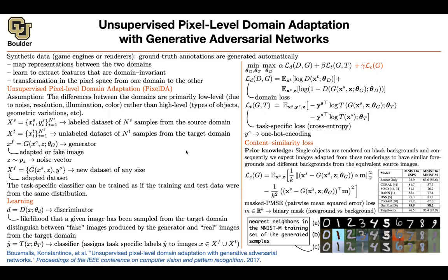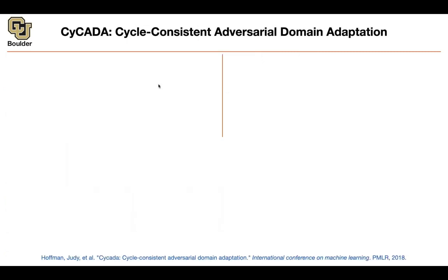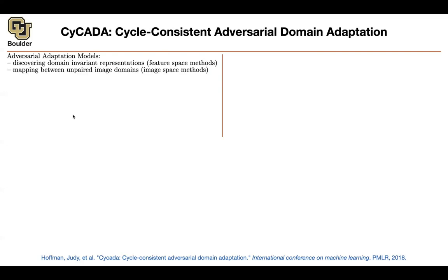Now that we see the similarity between domain adaptation and GANs, maybe we can borrow ideas from the GANs literature to make domain adaptation better. We learned about cycle consistency when covering conditional GANs, and we can bring those ideas to domain adaptation. This paper combines two competing methods: comparing images at the feature level and at the pixel level. Both used a minimax or GAN-type loss. Now we are combining the two and borrowing ideas from cycle consistency to do unsupervised domain adaptation.